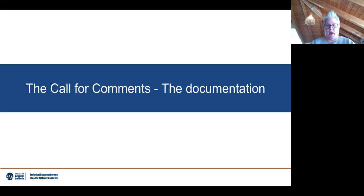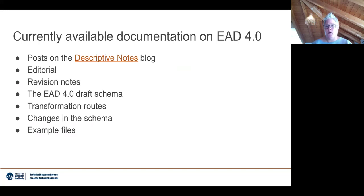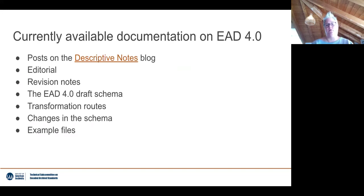What documents do we have and how can you engage with the new version? At the moment we have a series of blog posts on the Descriptive Notes blog run by the SAA Description Section — two published so far with three more to come. We also have an editorial, revision notes, the draft schema, tables with transformation routes and schema changes, and some initial example files.